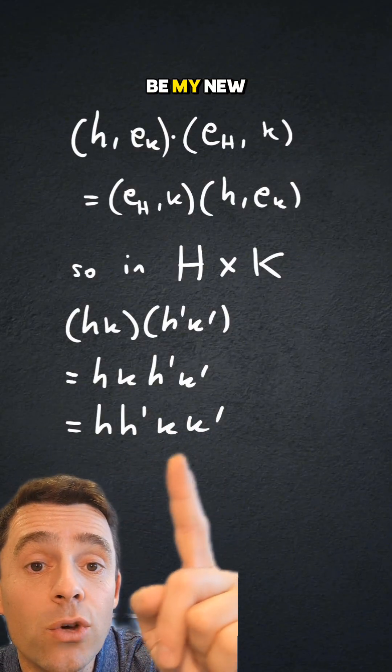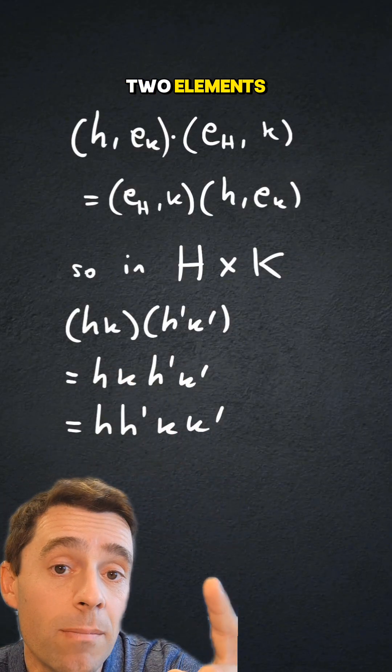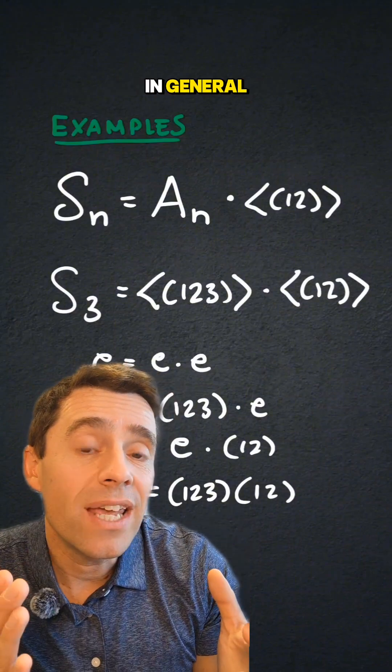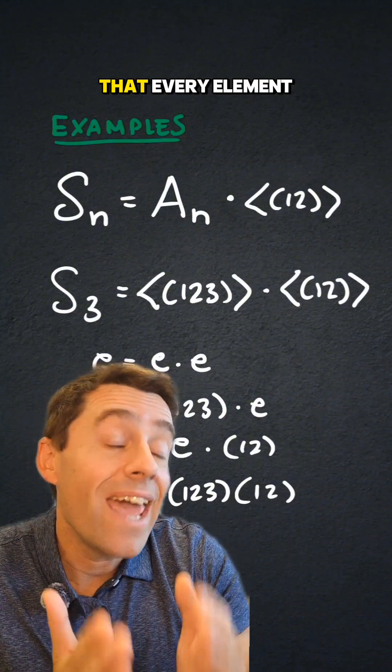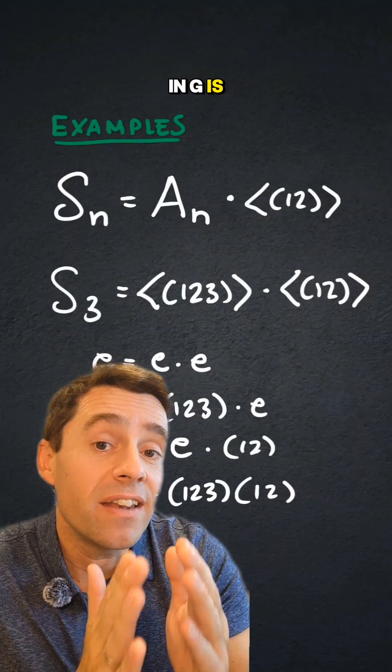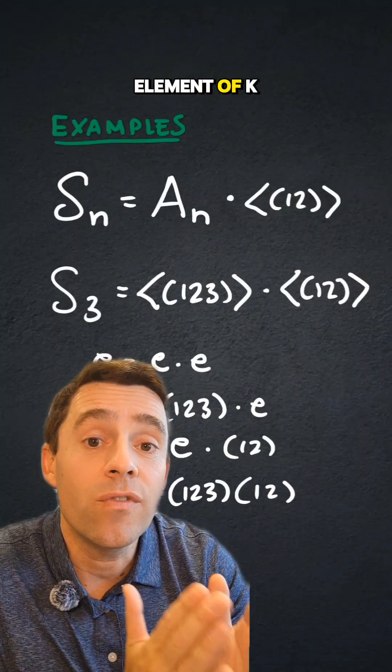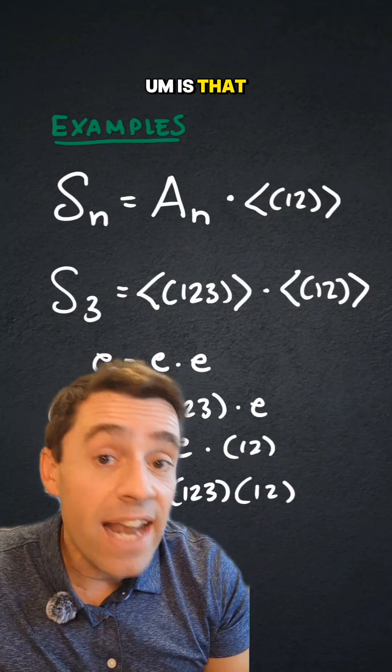and this will be my new element that is the product of those two elements. So what happens in general if I have a group g that can be written as h times k, that every element in g is an element of h times an element of k, is that a direct product?